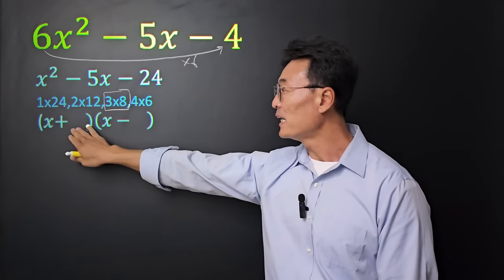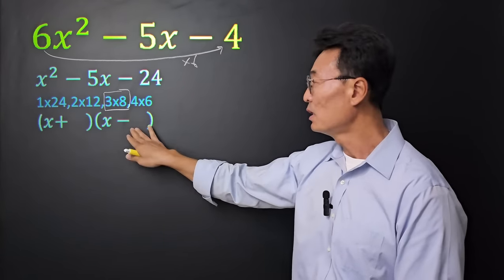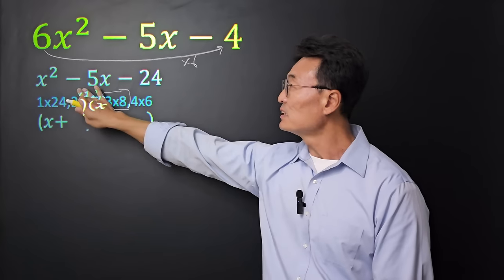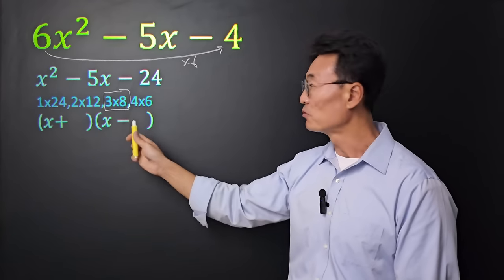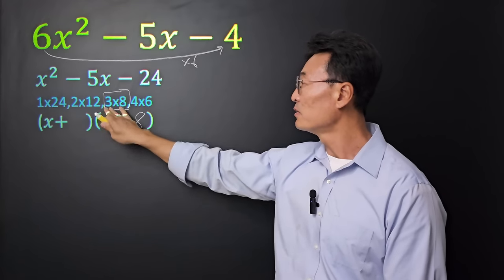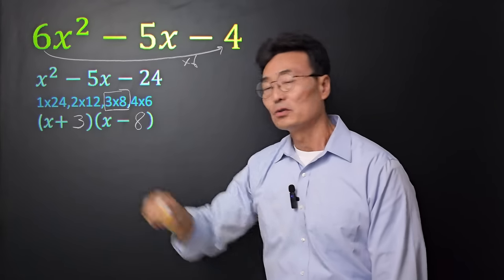Only thing you have to figure out is, does the 8 go here or the 8 go here? Since it's negative 5, we want to put the bigger number with the negative. So we put the 8 here and the other number, or the 3, goes right there.